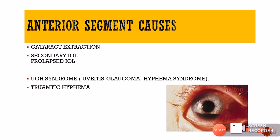There are also anterior segment causes of vitreous hemorrhage, including cataract extraction, secondary IOL, and dropped IOL where excessive surgical manipulation can damage blood vessels leading to intravitreal bleed. In the uveitis-glaucoma-hyphema syndrome, hyphema can trickle into the vitreous leading to vitreous hemorrhage.